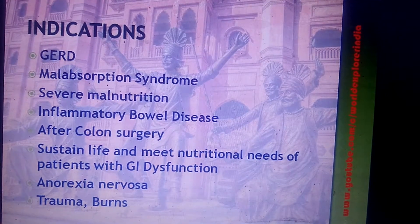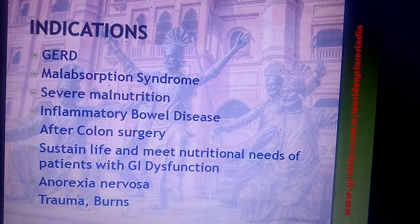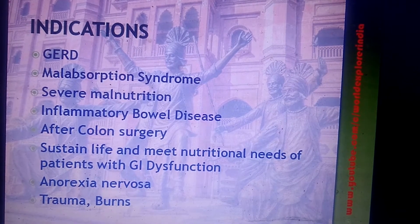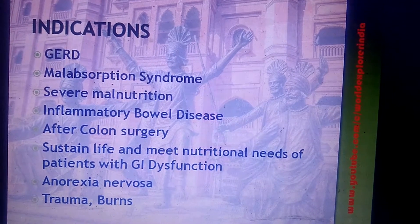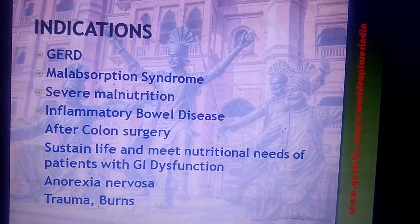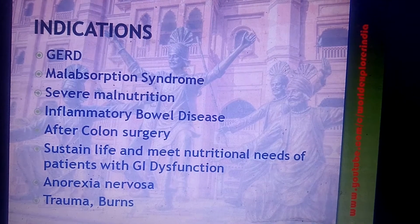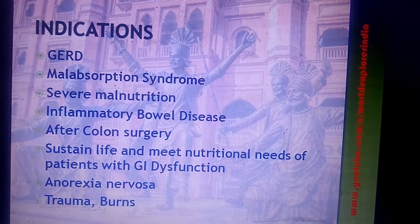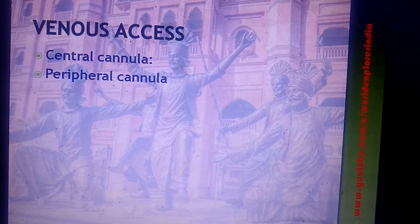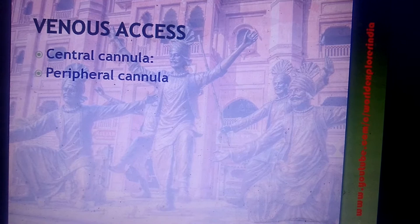Indications for TPN include GERD, malabsorption syndrome, severe malnutrition, inflammatory bowel diseases, and after surgery of the GI tract such as colon surgeries. It is also used to sustain life and meet the nutritional needs of patients with GI dysfunction, anorexia nervosa, trauma, and burns. TPN is usually given through the central venous route or peripherally inserted central catheters.